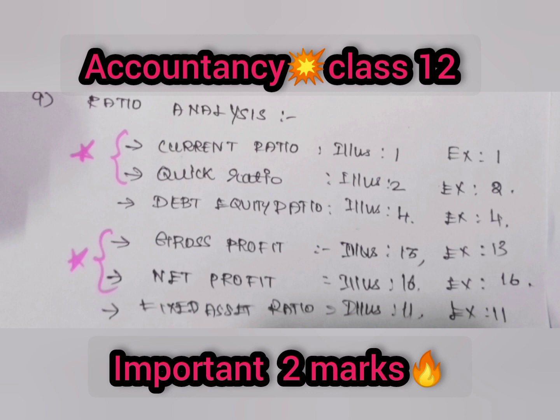First, the current ratio and the quick ratio. Then, the gross profit and net profit — 5 marks and 3 marks respectively. Let's try the preference.